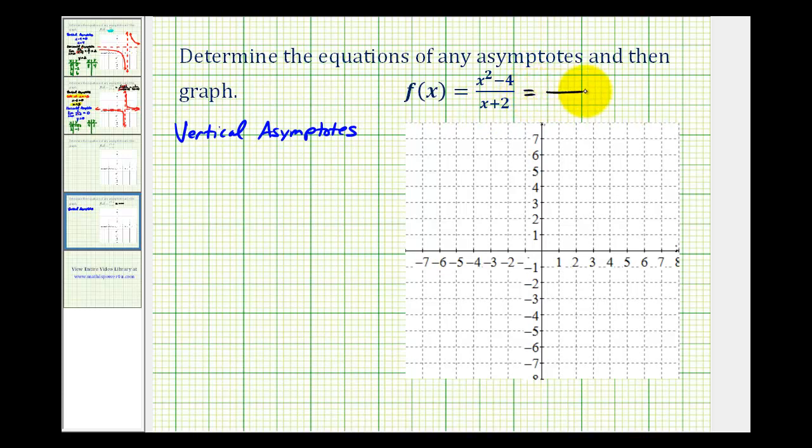And notice in this example, we have a difference of squares in the numerator, so we have the quantity x plus two times the quantity x minus two all over the quantity x plus two.